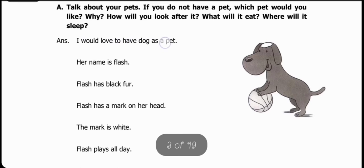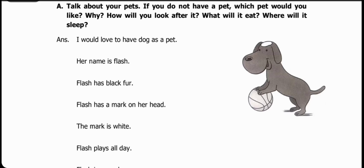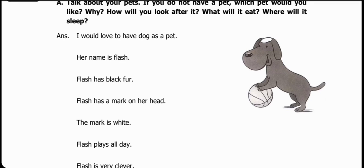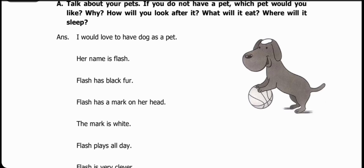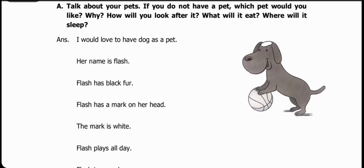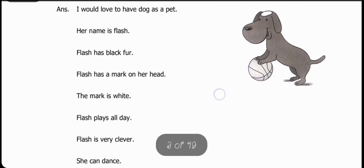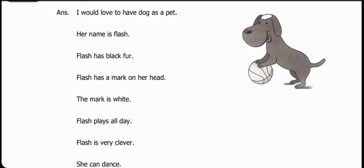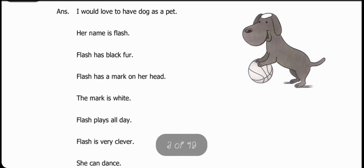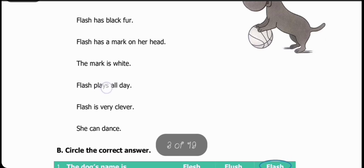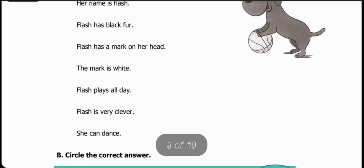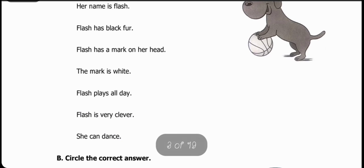I would love to have a dog as a pet. This is a pet and this is a dog and this is a female pet. Just like we read about Rish who was a male cat, this dog is a female pet. Her name is Flash. Flash has black fur. Flash has a mark on her head - you can see this. The mark is white. Flash plays all day. Flash is very clever. She can dance.